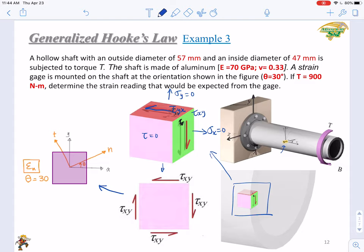So sigma X equals 0, sigma Y equals 0, and tau XY is not 0. You have only a tau XY. Then your request is to calculate sigma N. No, not sigma N, it's epsilon N. So what can be measured by a strain gauge is a strain. So you will just need to determine the epsilon N.